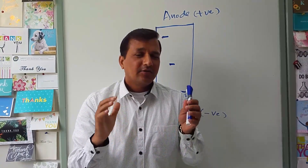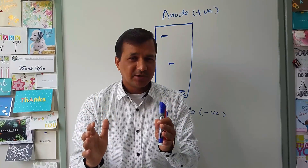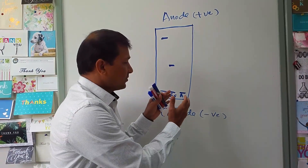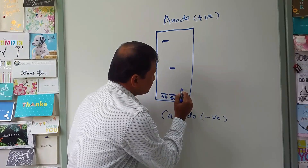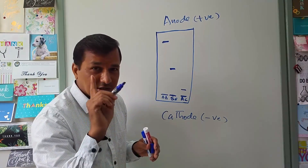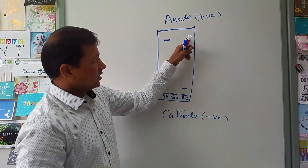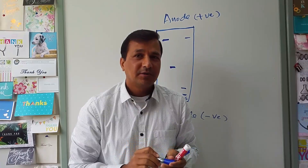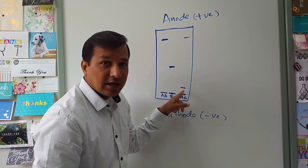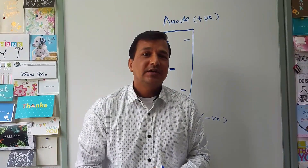In HbAC, one beta chain is normal and the other is the C type. In the C-type beta chain, the sixth amino acid glutamate is replaced by lysine, which is a positively charged amino acid. You have removed a negative charge and added a positive charge. Therefore, the C-type beta chain moves toward the cathode, while the normal beta chain moves toward the anode — giving two bands: one near the cathode and one near the anode.